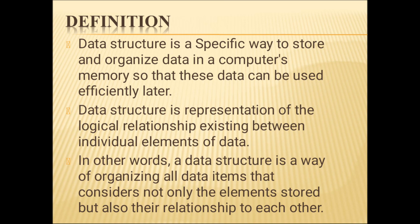That is why the type is called atomic data. The second one is composite data. Composite data is the combination of several atomic data. For example, consider the date of birth — 27/1/2011. When you take the date as a whole, it has meaning, but individual components like the day value alone change the meaning.